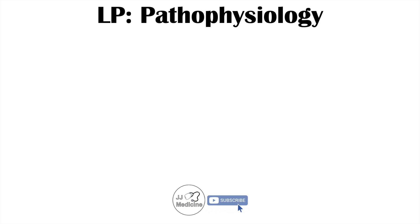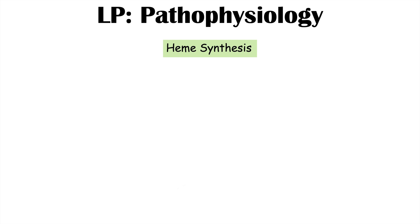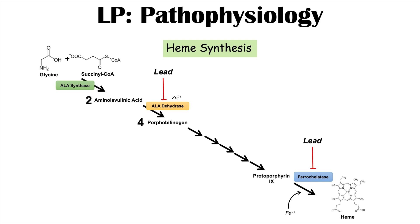How does lead actually cause disease? Lead affects heme synthesis, which we need to make hemoglobin — the molecule that carries oxygen in our red blood cells. Lead affects two enzymes in particular: ALA dehydratase and ferrochelatase, the last enzyme in the heme synthesis pathway. Because of these two affected enzymes, there is a backing up or an increase of precursors in the pathway.